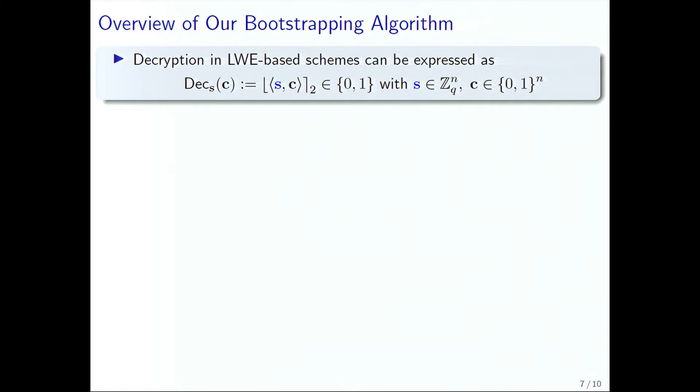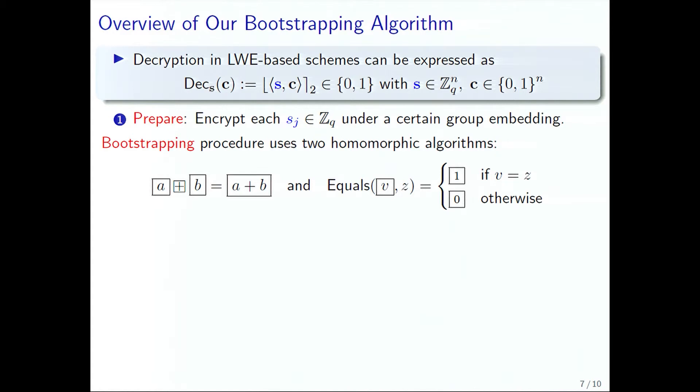Our overview of our bootstrapping algorithm: decryption in these schemes can be expressed as the inner product of a secret key with a binary ciphertext C, and then rounding that to the nearest multiple of Q over 2 modulo Q. Our scheme has several steps. First, we prepare by encrypting each of the coordinates of the secret key S under a certain group embedding. For actual bootstrapping, we use homomorphic addition and an equals operation.